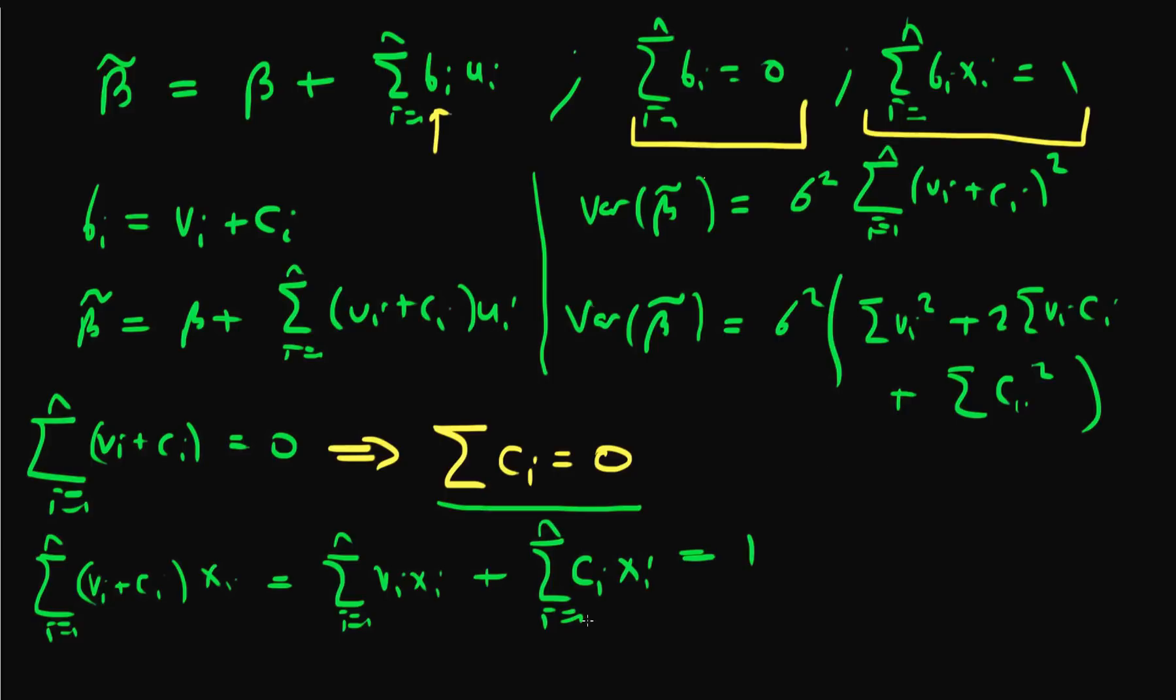Remember that this entire expression has to sum to 1 because that's our condition for beta tilde to be unbiased. Also remember that from our least squared estimator derivation, we found that the sum of vi times xi equals 1.